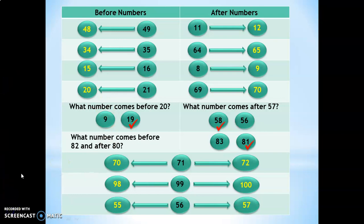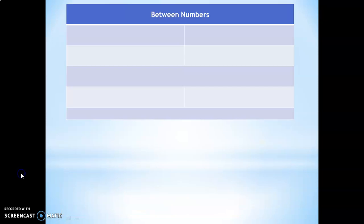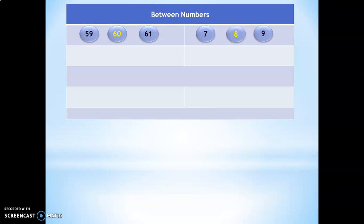That was a great job done by all of you! Now let us move on to testing the between numbers concept. What is the number which comes between 59 and 61? The answer is 60. What is the number that comes between 28 and 30? The answer is 29.